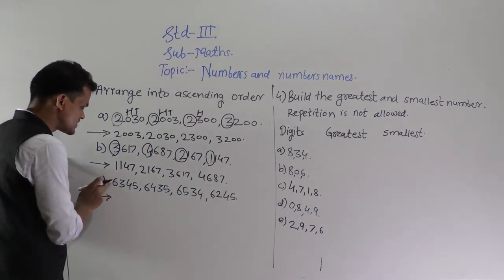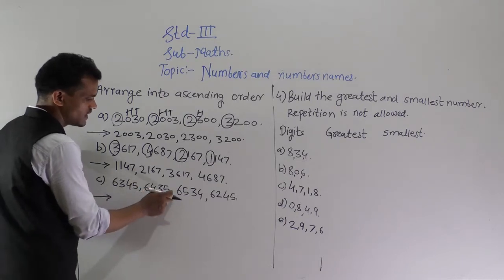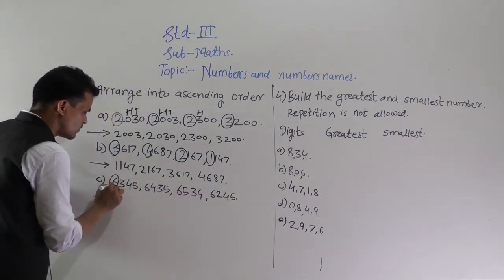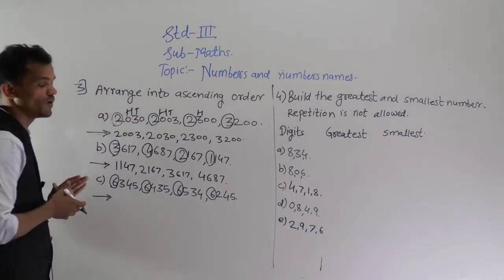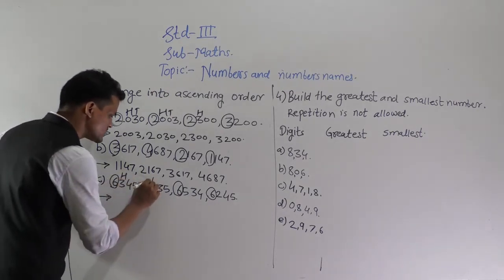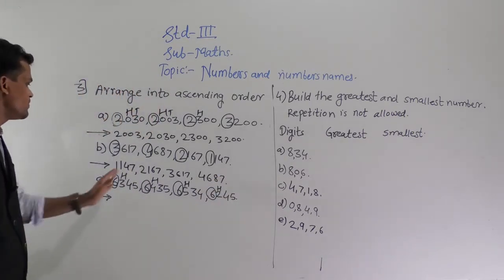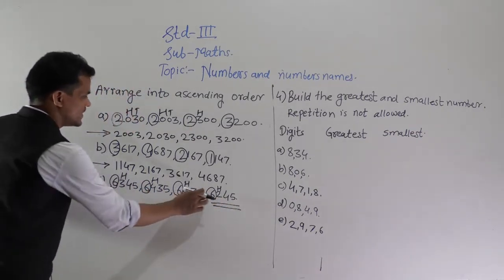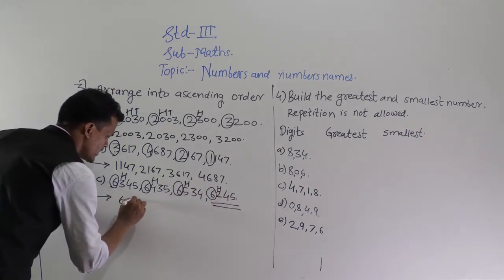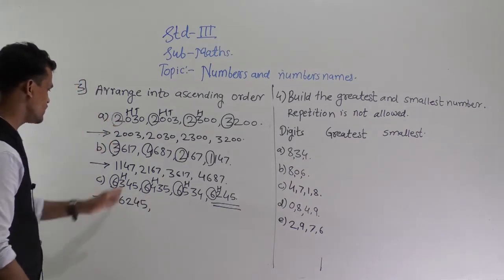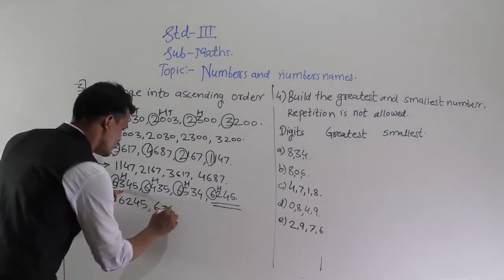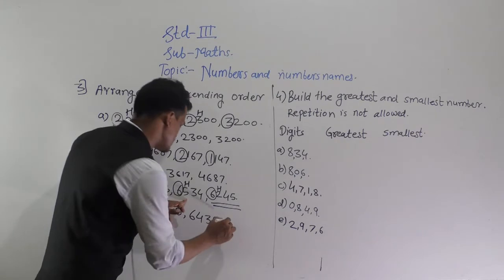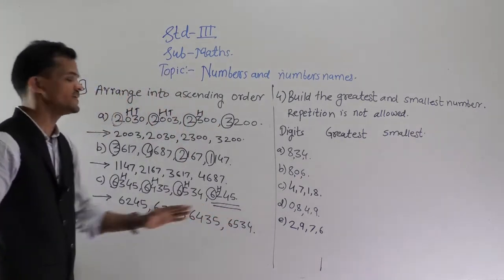Next, arrange 6345, 6435, 6534, and 6245 in ascending order. The thousands place digit is the same in all numbers. So compare the hundreds place digit: here 3, 4, 5, and 2. The number with the lowest hundreds digit comes first — that is 6245, then 6345, then 6435, and at last 6534. This is the ascending order.